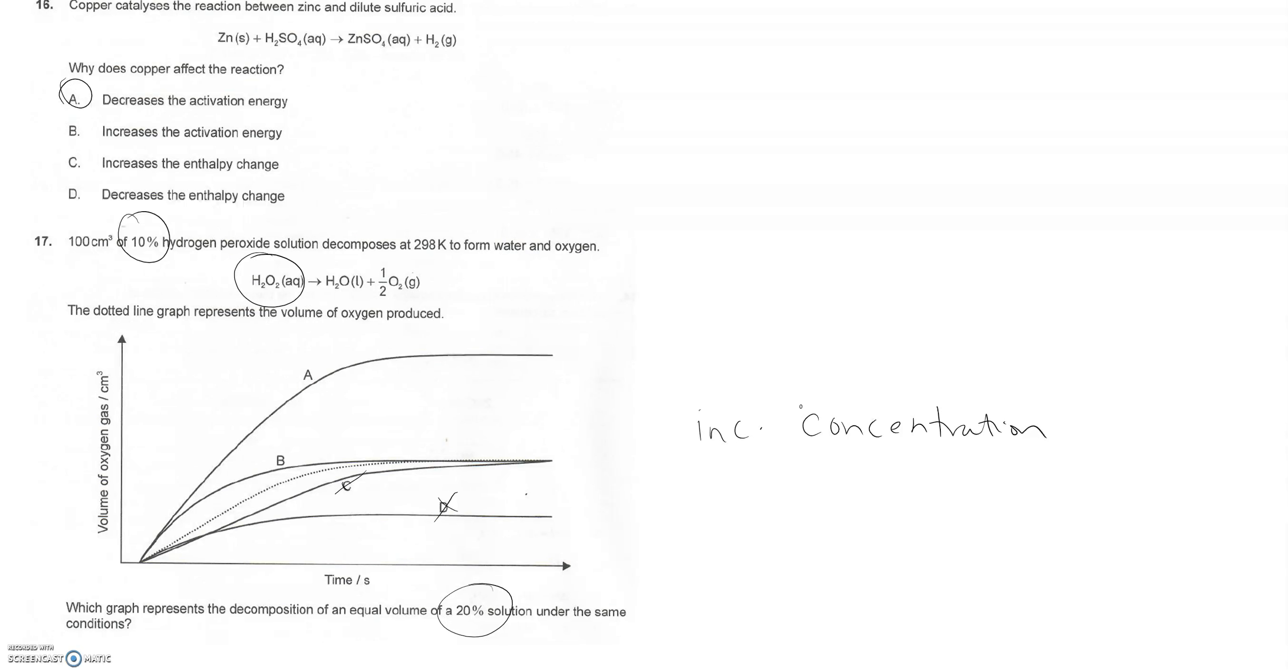Both A and B start to look like maybe they're going to be increasing in concentration, but A is really the only one that does increase in concentration. Look at how much more volume is produced as a result of this increase in concentration.